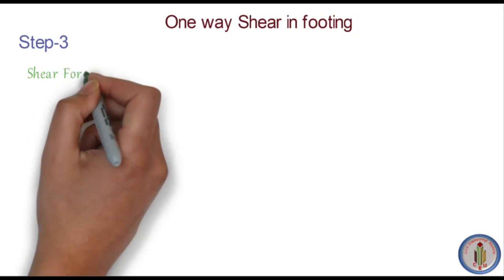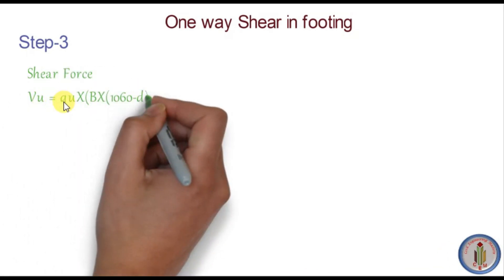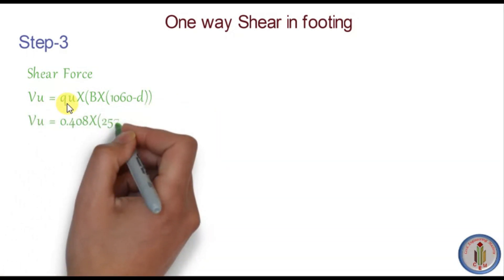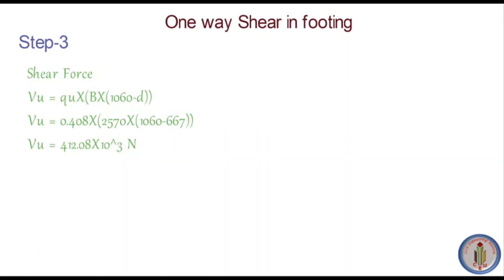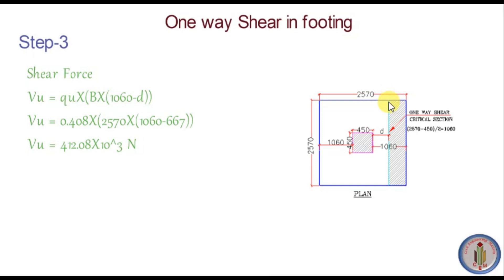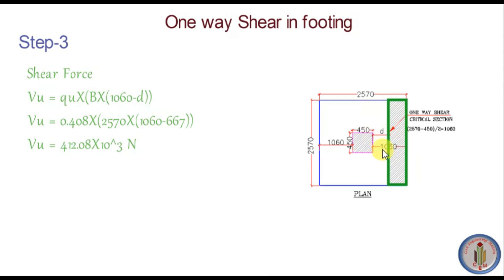Next, let's calculate the shear force. Vu is the factored shear force. The formula is: Vu = Qu × B × (1060 − d), where Qu is the net soil pressure at ultimate load, 2570 mm is the width of the footing, and 1060 mm is the distance from the face of the column, from which we subtract the effective depth d. We finally get Vu = 412.08 × 10³ N.